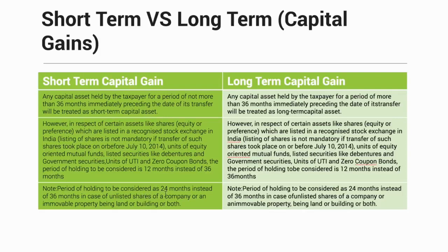Similarly, for immovable property — being land or building, or both — the threshold is 24 months instead of 36 months. So if you hold land for up to 24 months, it is considered short-term capital gains. If you hold land for more than 24 months, it is considered long-term capital gains.